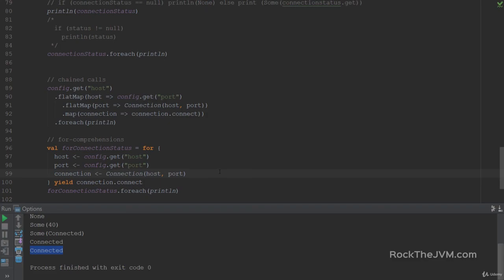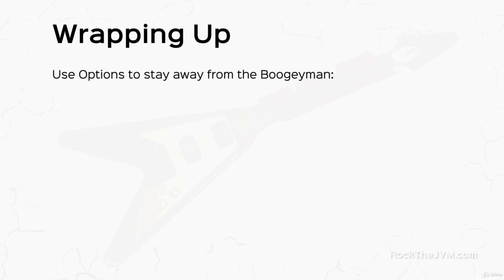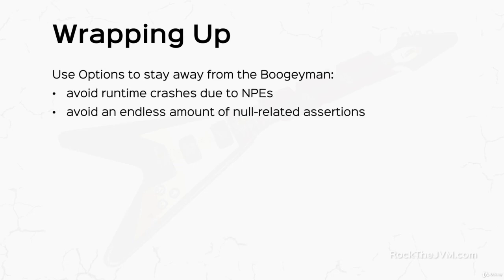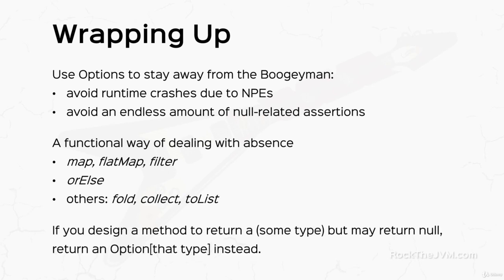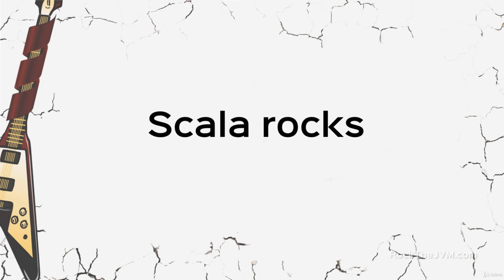Recap: use options to stay away from nulls, to avoid runtime crashes from null pointer exceptions, and to avoid an endless spaghetti of null assertions. Options are a functional way of dealing with the possible absence of a value. You've learned how to use map, flatMap, filter, and orElse to chain unsafe APIs. Remember: if you design methods that might return nulls, use options instead. In the next video we'll talk about handling failure.